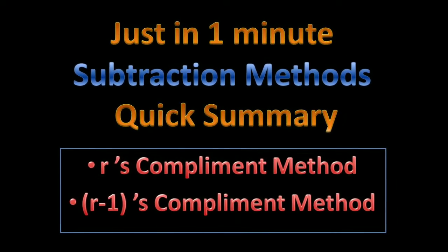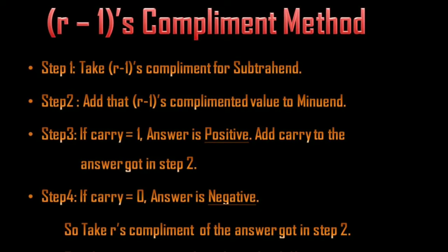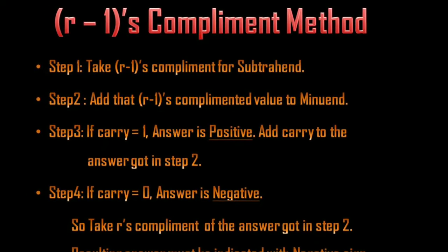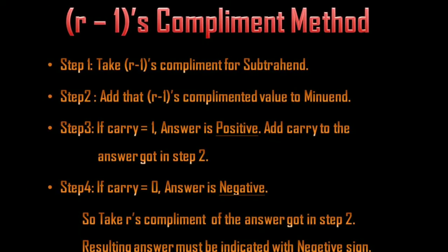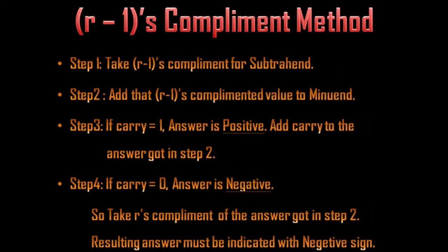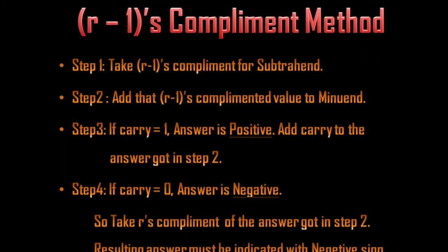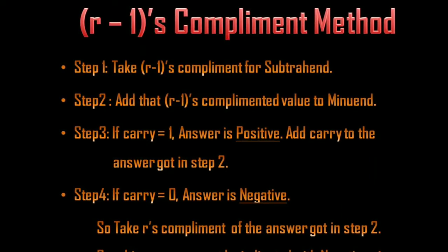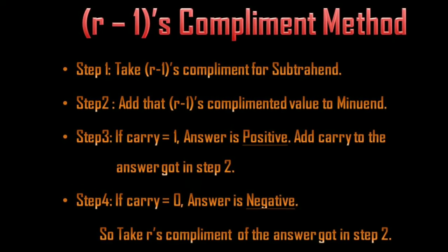Let's have a quick summary. In R-1's complement method, the first step: you need to take R-1's complement for the subtrahend and then add that to the minuend. If carry generates, the answer is positive, so add the carry to the answer. If carry is equal to 0, that shows the answer is negative, so you need to take R-1's complement for the answer and indicate a negative sign.